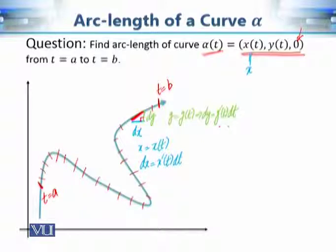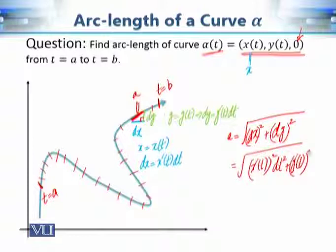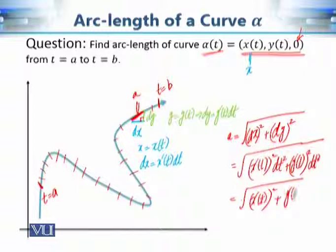Given dx and dy, we calculate the length of the tiny piece. Since it forms a right-angle triangle, we use the Pythagorean theorem: the length a = √(dx² + dy²) = √(x'(t)² dt² + y'(t)² dt²) = √(x'(t)² + y'(t)²) · dt. This is the length of one tiny bit of the curve.